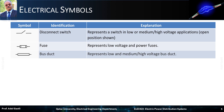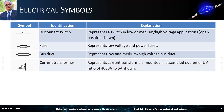A bus duct, also called busway, is a sheet metal duct containing either copper or aluminium bus bars for the purpose of conducting a substantial current of electricity. It is an alternative means of conducting electricity to power cables or cable bus. The next symbol represents current transformers mounted in assembled equipment.